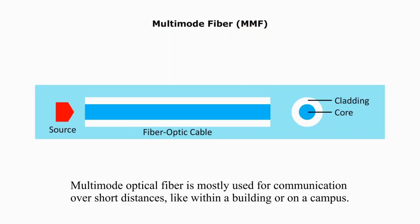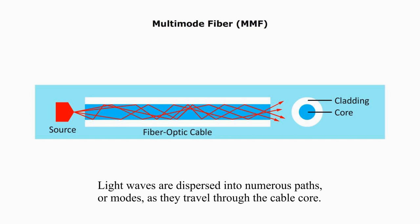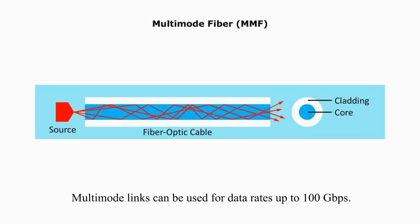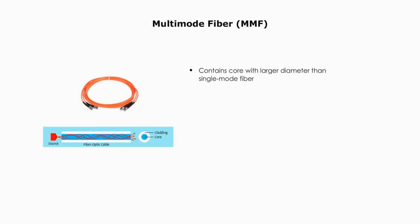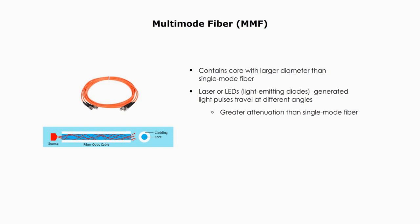Multi-mode fiber is mostly used for communication over short distances, like within a building or on a campus. Light waves are dispersed into numerous paths or modes as they travel through the cable core. Multi-mode links can be used for data rates up to 100 Gbps. Multi-mode fiber core has a larger diameter than single-mode fiber. Laser or LED-generated light travels at different angles, thus it has greater attenuation than single-mode fiber. Modal distortion is the sole problem of multi-mode fiber. Multi-mode fiber is better for short distances. If you see a fiber patch cable with orange color, you know it is made from multi-mode fiber.